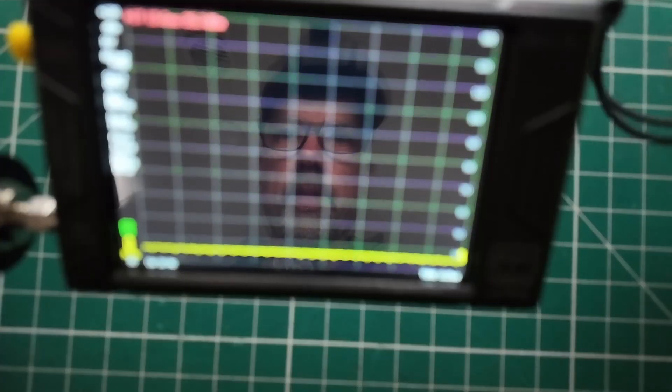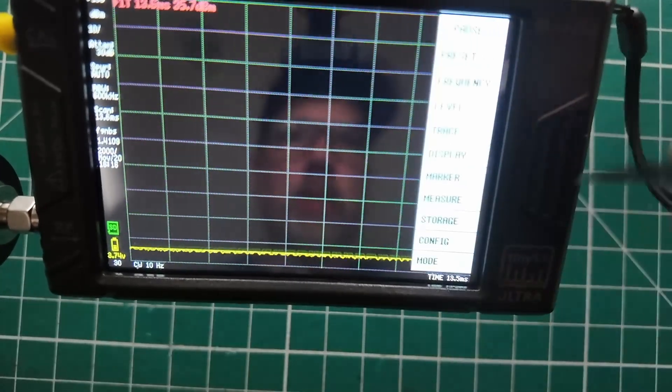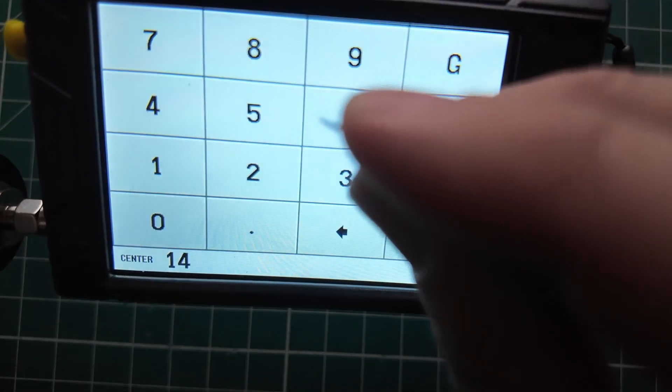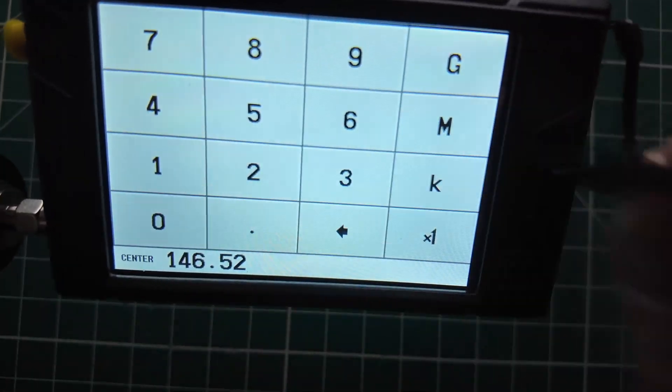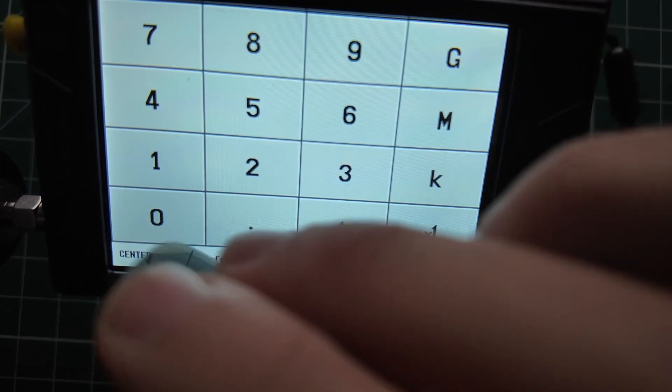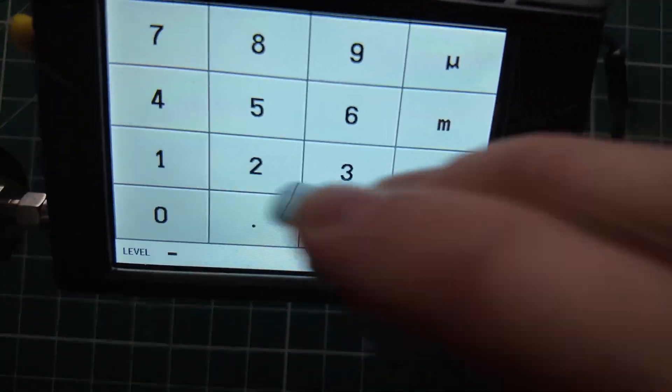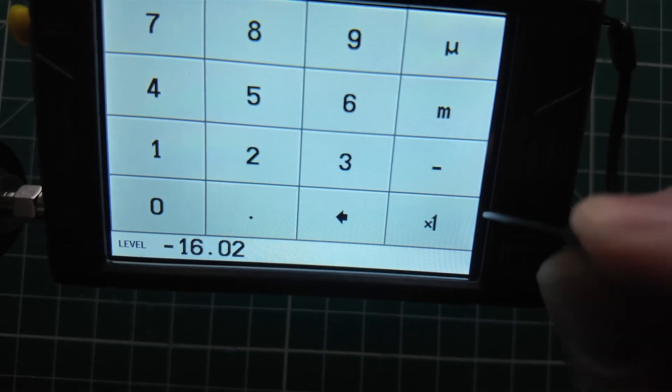Hi everybody. Let's do some configuration here. Let's do measure harmonics of 146.52 MHz. And let's do full span. And let's do display draw line at minus 16.02. That's our pass-fail line. There we go.